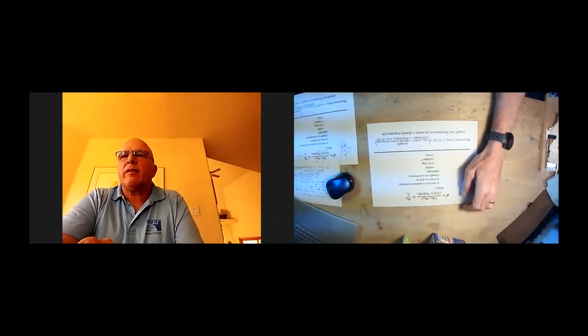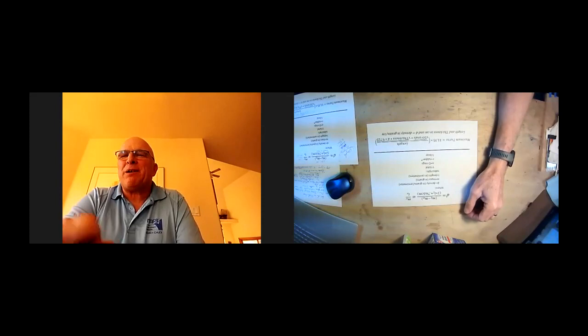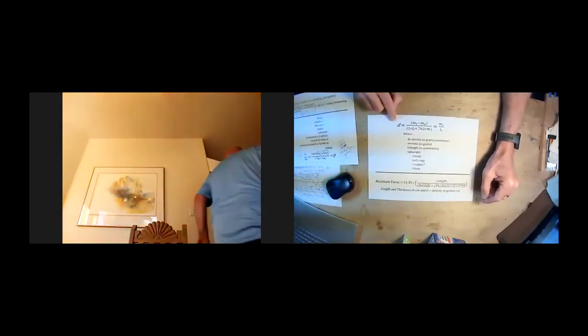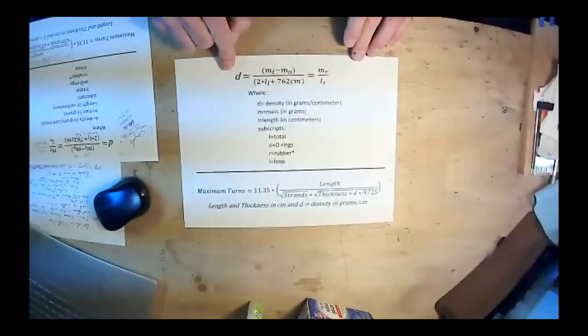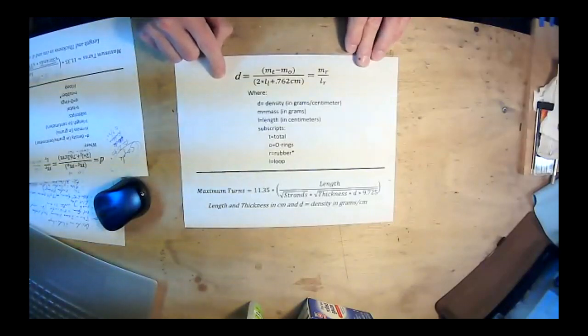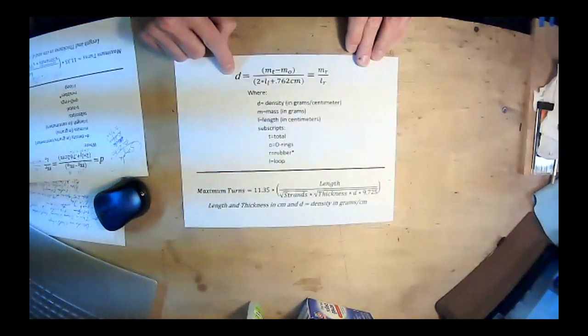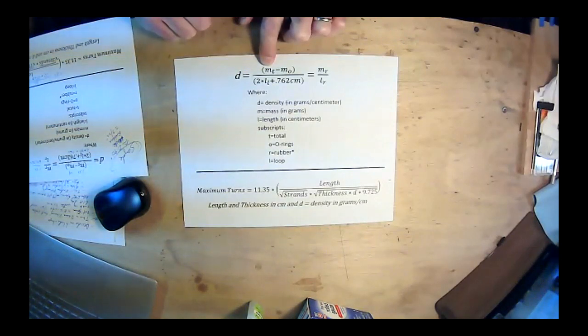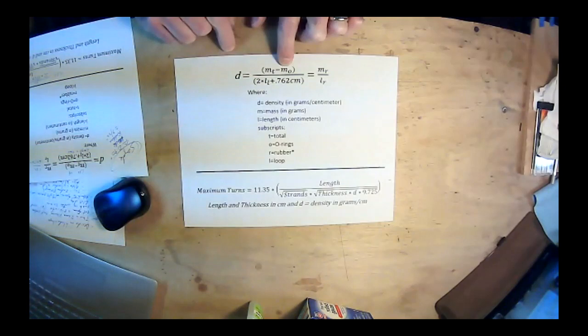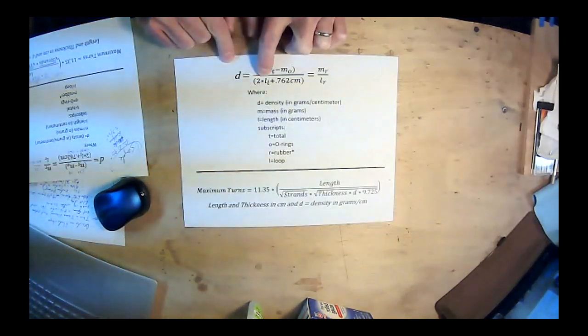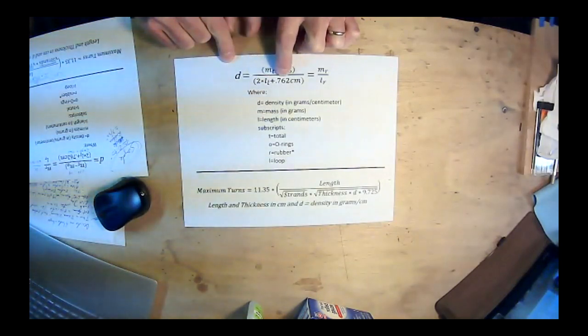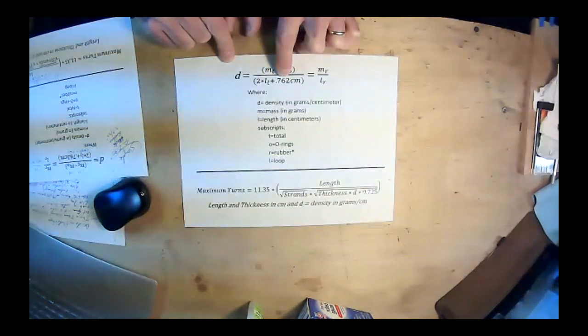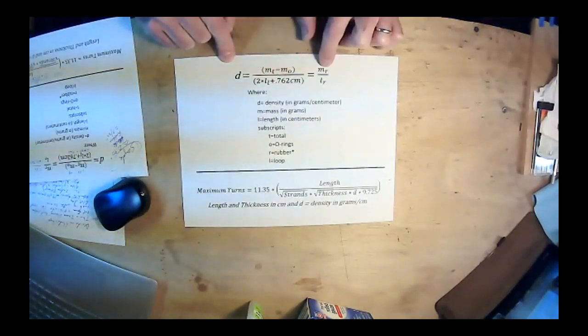I'm sorry that this appears upside down in the camera. So the first step we do, now this is to calculate an estimated maximum number of turns before the rubber band will break. We also do what Chuck is talking about to empirically test that and break some rubber. But it gives us a feel for about how many turns we're going to be putting into the rubber motor. So first we calculate the density of the rubber, and the density is the total mass, which is the mass of the tied rubber motor with its O-rings on it, minus the mass of the O-rings. And the length of the motor is two times the length of the loop. And then we say plus 0.762 centimeters, which is a conversion of 0.3 inches, which is how much we normally figure is tied into the knot. So that's going to give you mass over length, which is the density of the rubber.